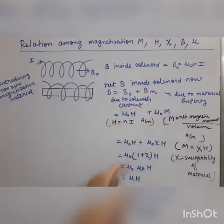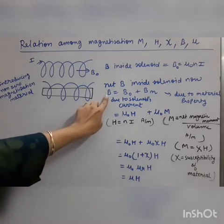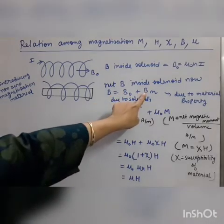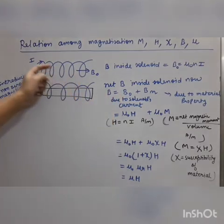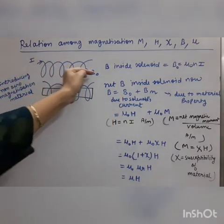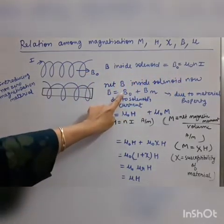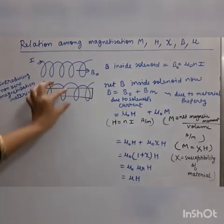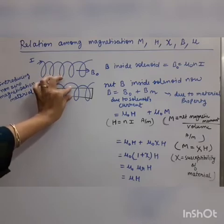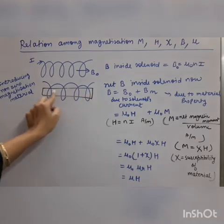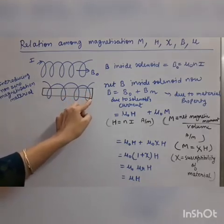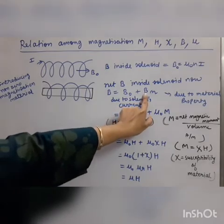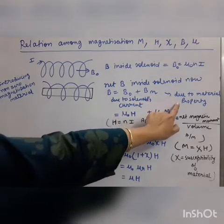What is the net magnetic field B inside the solenoid now? The total magnetic field B inside the solenoid is the addition of B₀ and Bm. B₀ is the field due to the current flowing in the solenoid — that is μ₀Ni. And Bm is the magnetic field due to the material, since it has circulating electrons, giving rise to a magnetic moment inside it. We call this magnetic field contribution Bm — it is due to the material property.